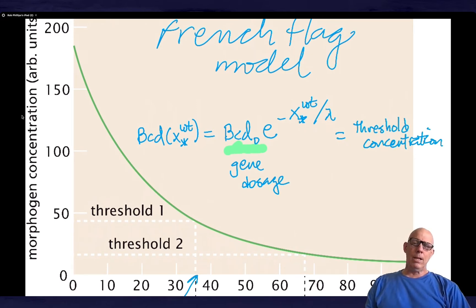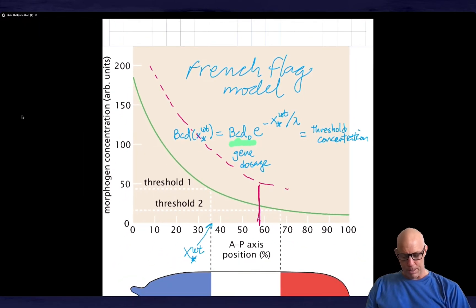Qualitatively, if I were to create a gradient in which I increased the level of the gene, then I would expect to see something like this. It would still be the exponential profile, but now the threshold would be moved over here. So if I increase the gene dosage, then I expect to move the threshold and thus the marker, for example, in this case, the cephalic furrow, I expect to move it to the right.